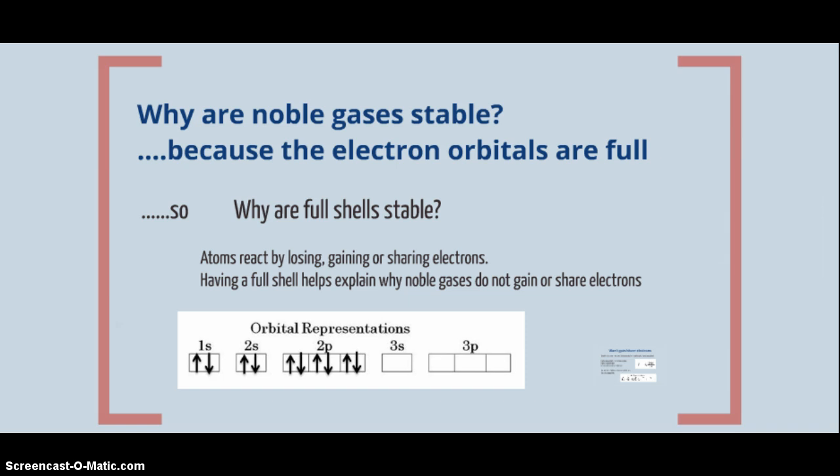So let's go back and review some of the things we've talked about in previous videos. Atoms react by losing, gaining, or sharing electrons. And having a full shell helps explain why noble gases do not gain or share electrons. So here is an example of neon, which is a noble gas.